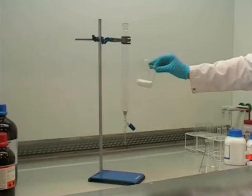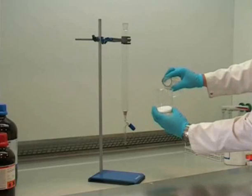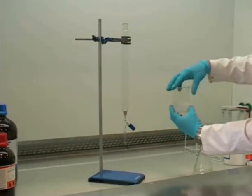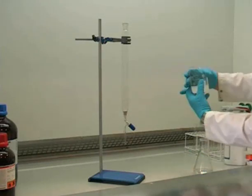We then take the appropriate amount of silica in a beaker, and this is then made into a slurry using the solvent we are going to run the column with. This solvent is known as the eluent. Here you can see us swirling the silica with the solvent before pouring it into the column very carefully.